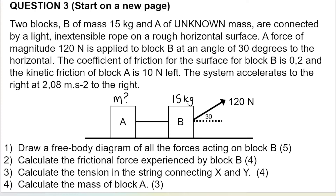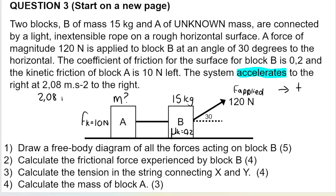A force of magnitude 120 Newtons is applied to block B at an angle of 30 degrees to the horizontal. The coefficient of kinetic friction for block B is 0.2, and the kinetic friction for block A is 10 Newtons to the left, which means the system is moving to the right. I'm choosing to the right as my positive direction. The system accelerates to the right at 2.08 meters per second squared.